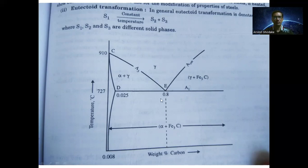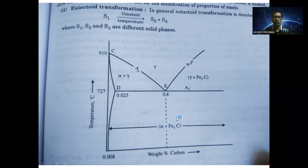The eutectoid transformation occurs at 0.8 percent carbon and 727 degrees Celsius. In this region there is alpha ferrite; in this region a mixture of alpha ferrite and austenite; and in this region a mixture of austenite and cementite. At 727 degrees Celsius and 0.8 percent carbon, austenite (solid one) transforms into two solids: alpha ferrite plus Fe₃C (cementite), which is called pearlite.